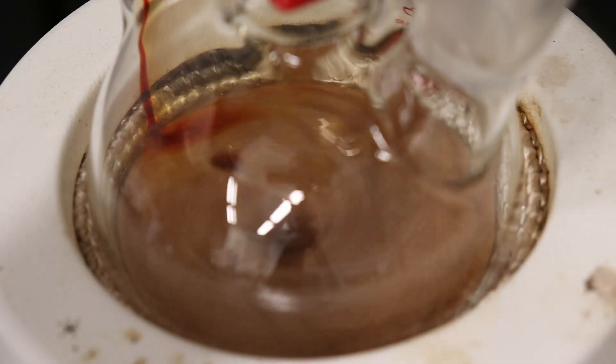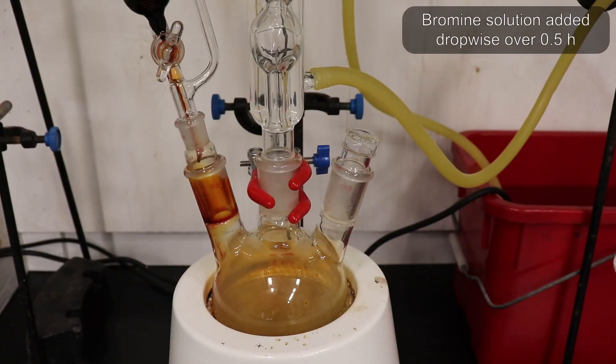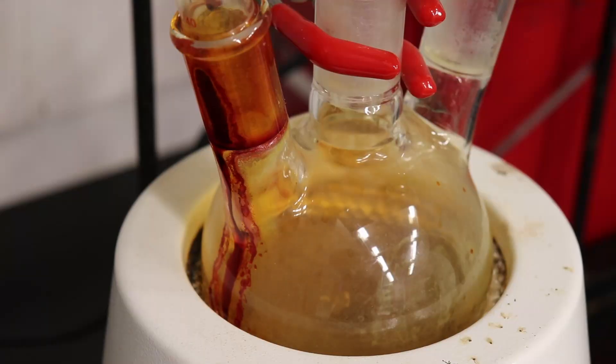Once everything was set up, I began the dropwise addition of the bromine solution into the flask. I added the bromine over the course of 30 minutes, and the reaction was mildly exothermic.